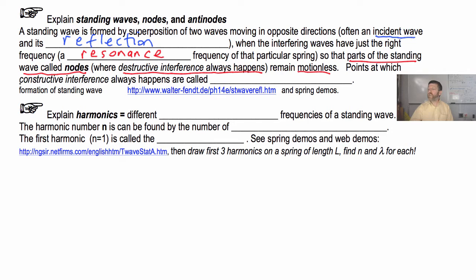Points at which constructive interference always happens, in other words the waves are always combining to form crests and troughs, those are called anti-nodes. And you can actually see this process in this next demo.